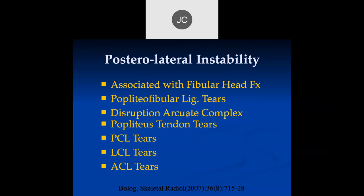Let's move on to posterolateral instability. It tends to be associated with a number of different injuries. The most important association is going to be tears of the lateral collateral ligament and fibular head fractures. You'll also see popliteal fibular ligament tears, disruption of the arcuate complex, popliteal tendon tears, PCL tears, and ACL tears — but the ones most significantly associated with posterolateral corner instability are fibular head fractures and lateral collateral ligament tears. They're often seen in conjunction with ACL tears, which are much more common.